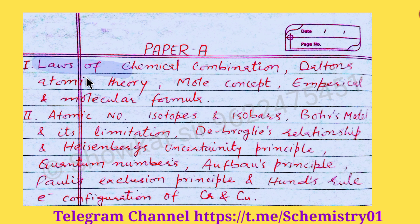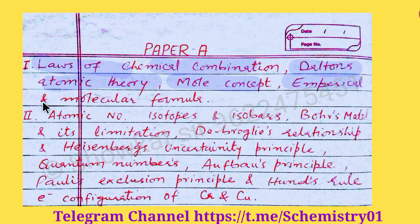Let's start with the first chapter: Some Basic Concepts of Chemistry. Here you will study the laws of chemical combination, which will be very important, and then Dalton's atomic theory and its various postulates. Similarly, the mole concept — you should be able to solve any kind of numerical type question on this. Then you will study how to calculate the empirical and molecular formula and the relationship between them.